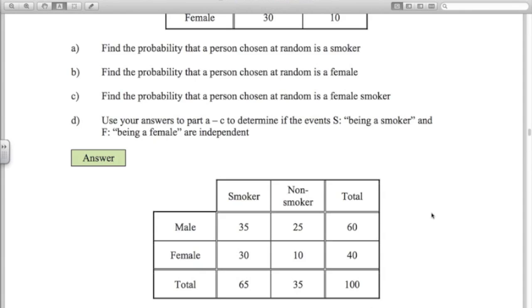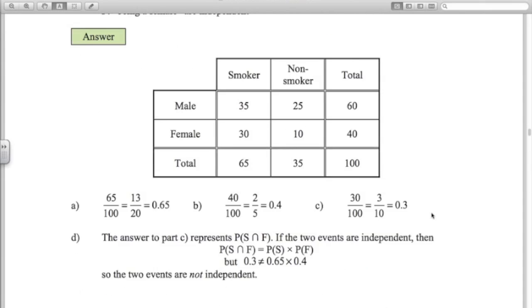So are these two events independent, being a smoker and being a female? Once again, don't go on gut instinct. The probability that someone is a smoker and a female is 0.3. Probability they're a smoker is 0.65. Probability they're female is 0.4. If they were independent, this would equal this times this. But if you do the sum on the right, you'll find that that's not true. So these two events are not independent.